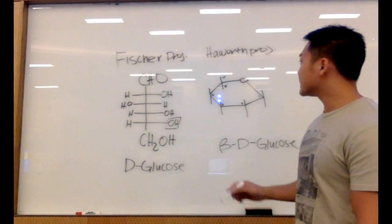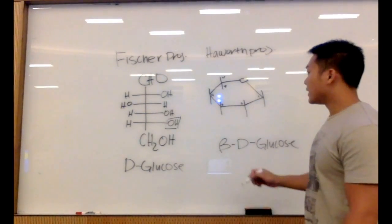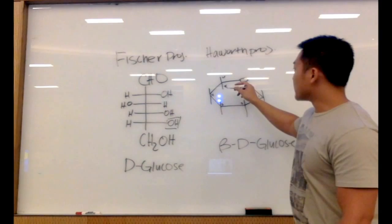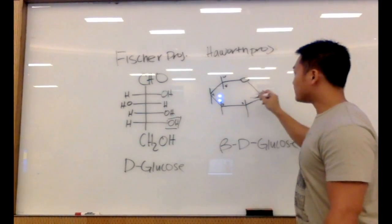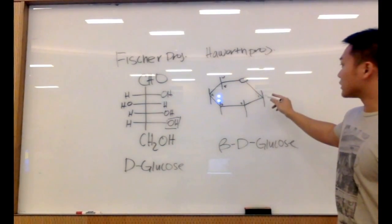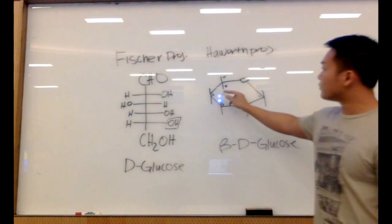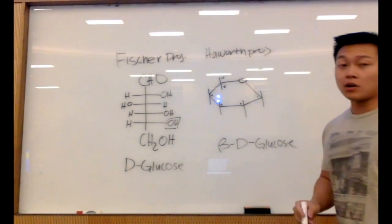And how to change this into a Haworth projection is that we're going to make a pyranose sugar. And we're going to label the pyranose sugar 1, 2, 3, 4, 5, and 6 for our carbons.